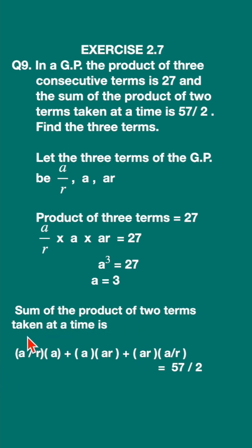Sum of the product of two terms taken at a time. That means a upon r multiplied by a, plus a into ar, plus ar into a upon r is equal to 57 by 2.